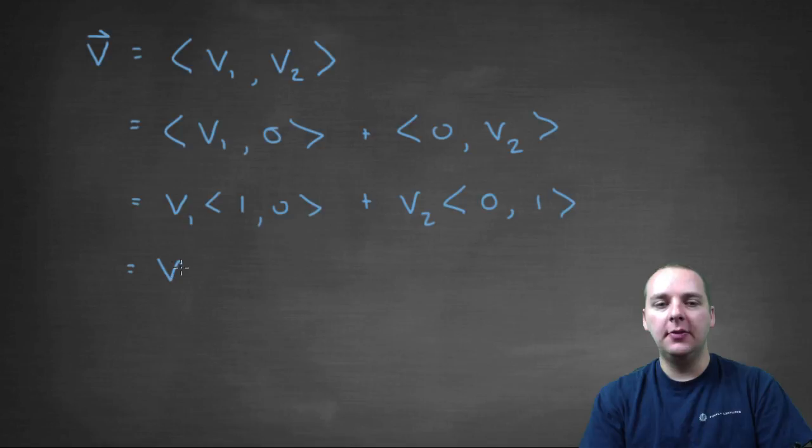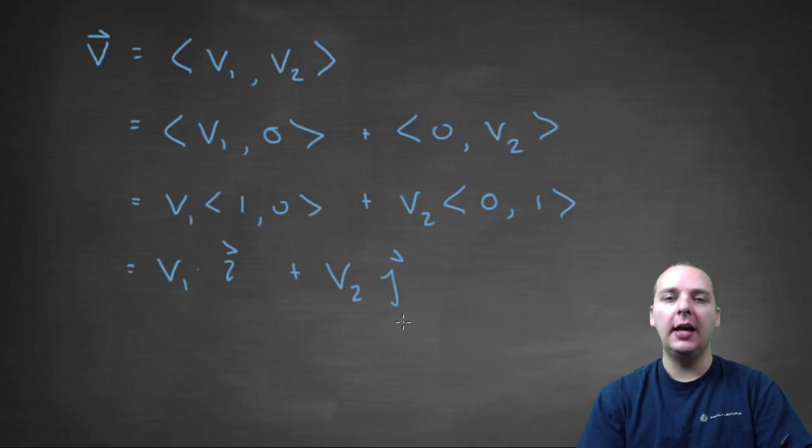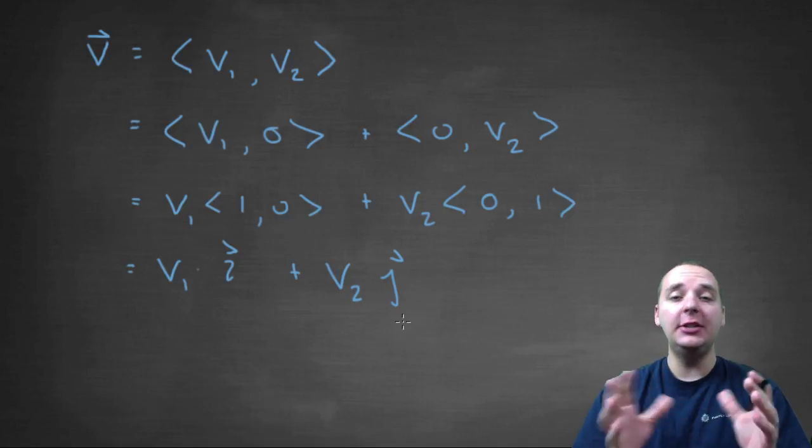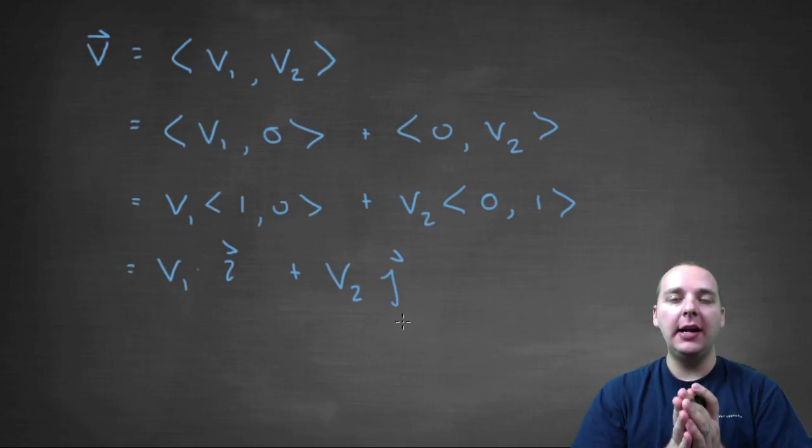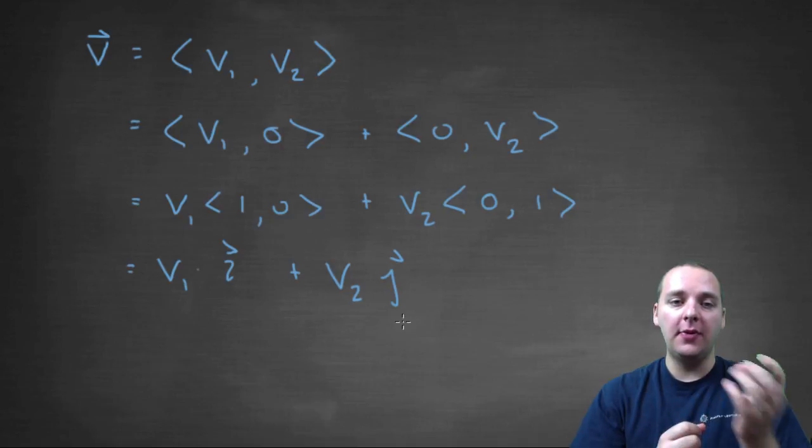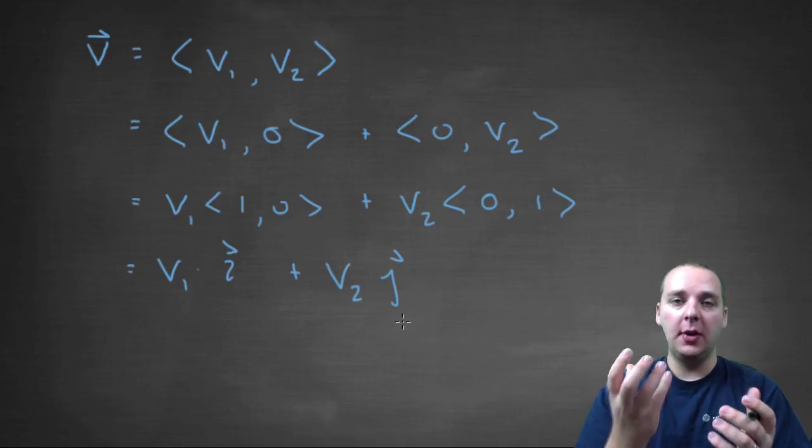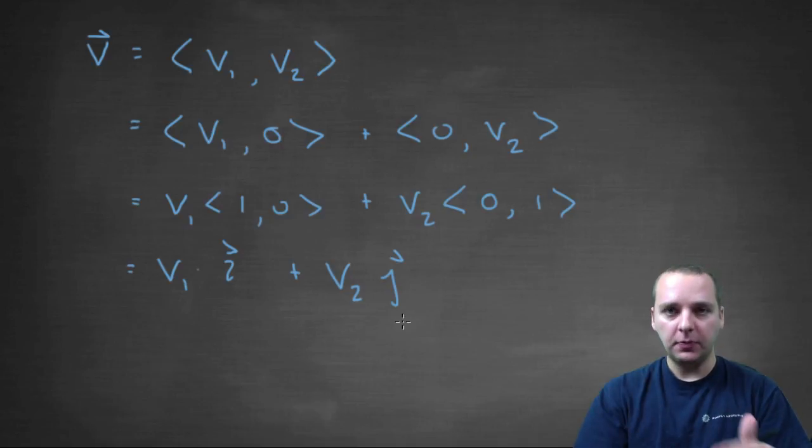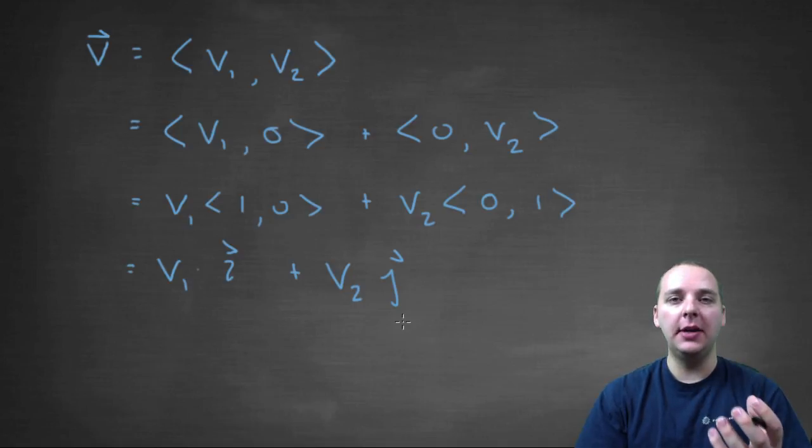What we have is v1 times vector i (you should recognize it, <1,0>), plus v2 times the vector j. So what we've just shown here is that you can take any generic vector and write it as a certain number of i's plus a certain number of j's. This is called a linear combination of i and j.